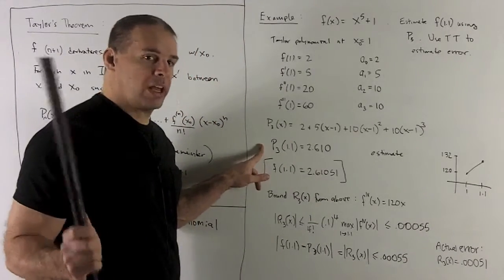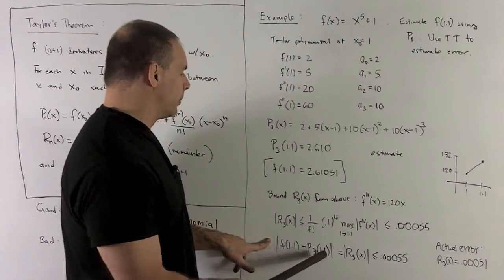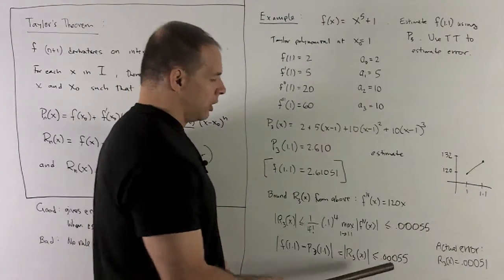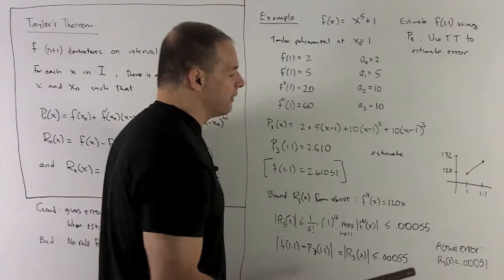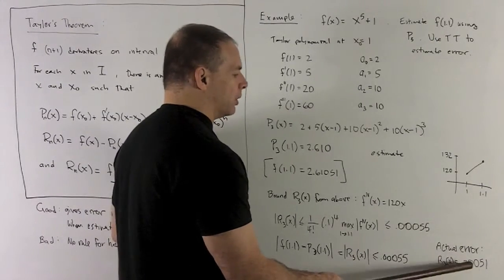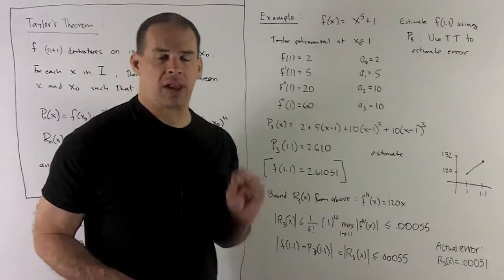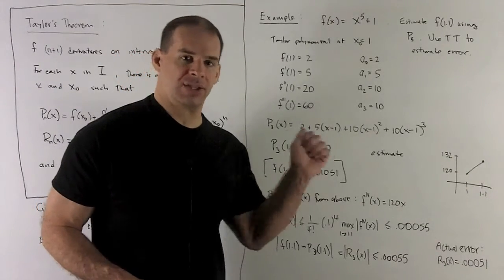The real error is just the difference between the function and the polynomial. So, we're getting that this has to be less than 0.00055, and we already saw that it's going to be 0.00051. So, Taylor's theorem agrees with us in this example.